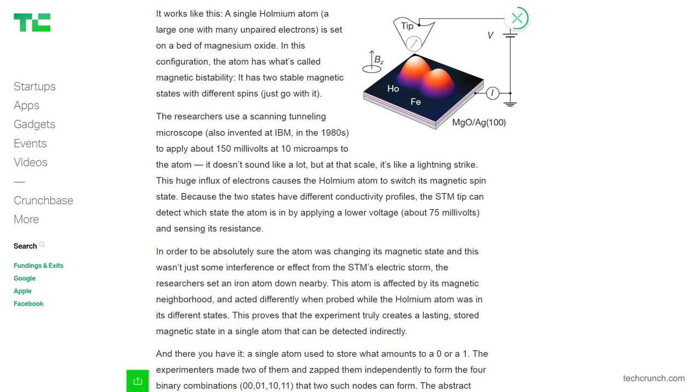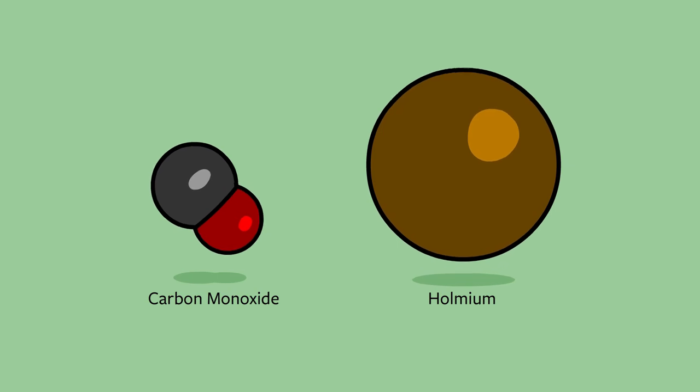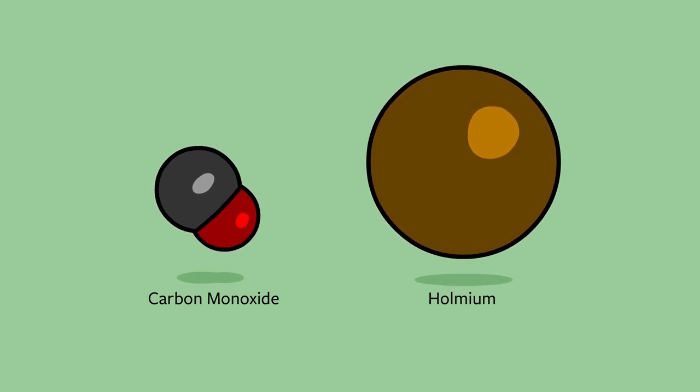Probably the most spectacular thing since IBM figured out how to use single holmium atoms to store data. And just to put things into perspective, even though carbon monoxide is two atoms, it's one oxygen atom and one carbon atom stuck together in a molecule, it's still significantly smaller than a holmium atom. In fact, by mass, a single holmium atom is about six times larger than a molecule of carbon monoxide. This is a huge deal.